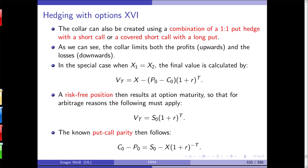If you equate both equations, you will see that C₀ − P₀ = S₀ − X/(1 + r) — and this is what we call put-call parity (Put-Call Parität). It means that if you know the price of a put, you know the price of the corresponding call and vice versa — a very simple relation between the call and put of the same underlying and same contract.